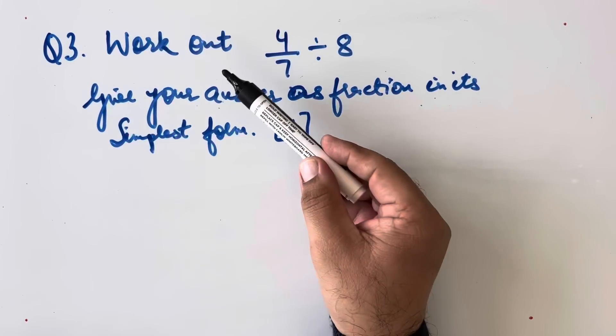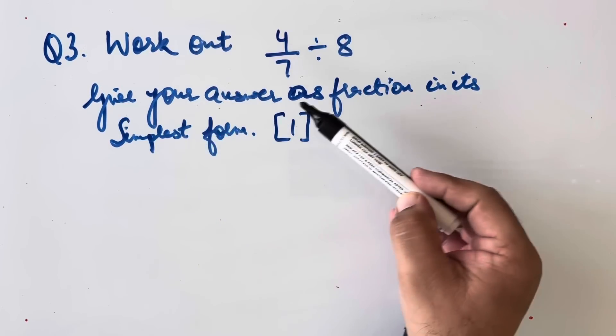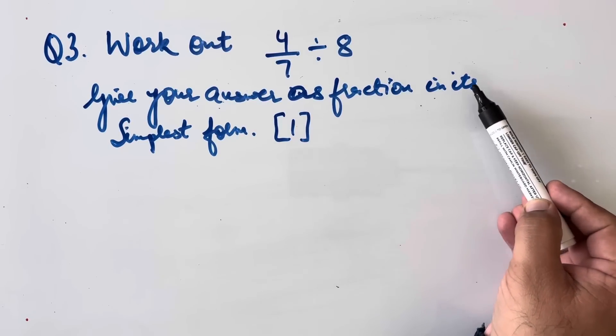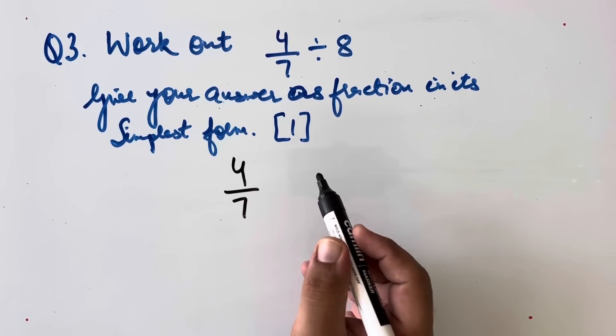Question number 3. Work out 4 by 7 divided by 8. Give your answer as fraction in its simplest form. Now this can be written as 4 upon 7.